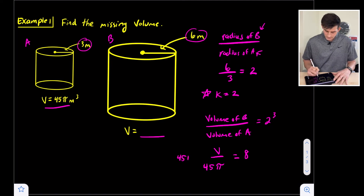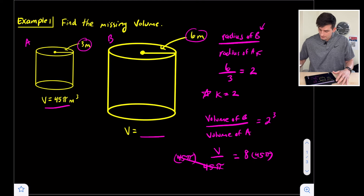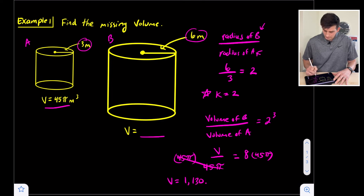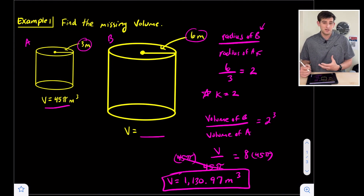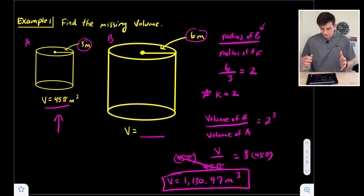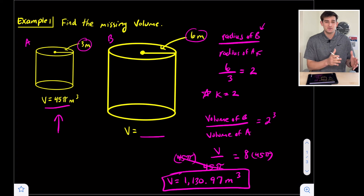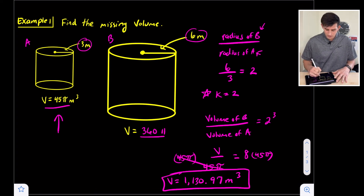Now we just need to solve for V, so we multiply both sides by 45π. So 45π times 8 gives us our volume. Volume is equal to 1,130.97 meters cubed as a decimal approximation. Since our original volume was in terms of pi, we can also write it in terms of pi: 8 times 45 is 360, so the volume is also 360π meters cubed. Both answers are good — it just depends on what the question asks for.